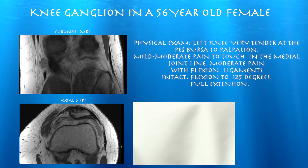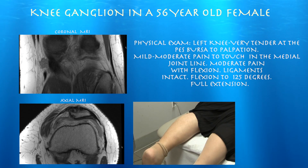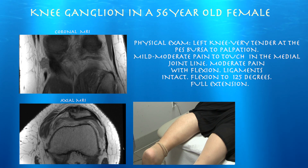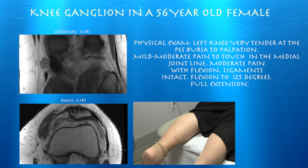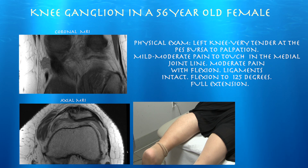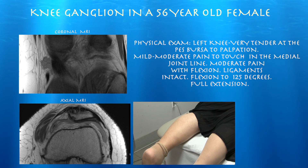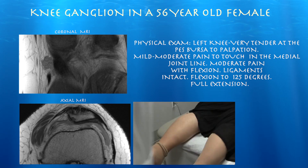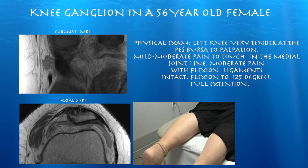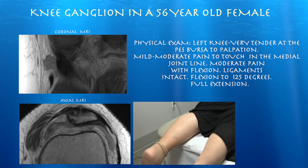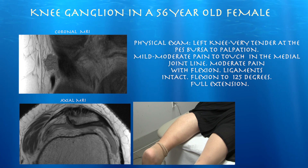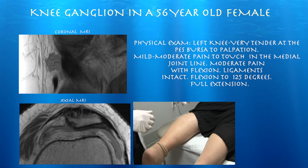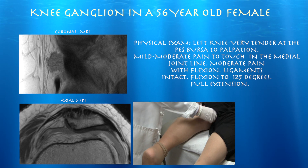A 36-year-old female here for pain in her left knee for about three months, no injury. On physical exam, she has pain in the pes bursa region and some moderate tenderness in the medial joint line. She's complaining of pain and stiffness with walking and bending her knee, with no locking. Her MRI shows arthritis under the kneecap and what appears to be a ganglion cyst just medial to the semimembranosus tendon, so we're going to go ahead and look at that.